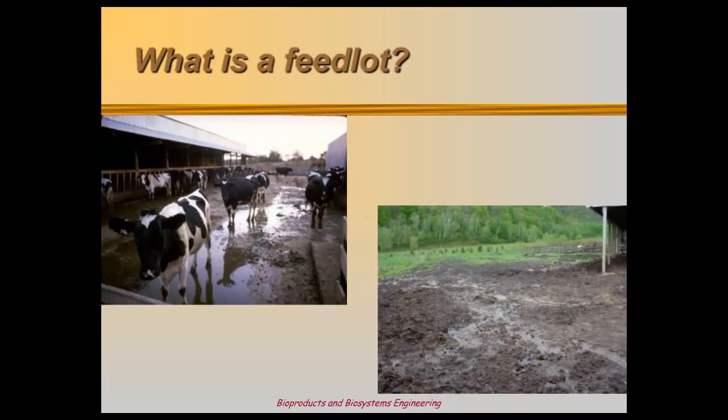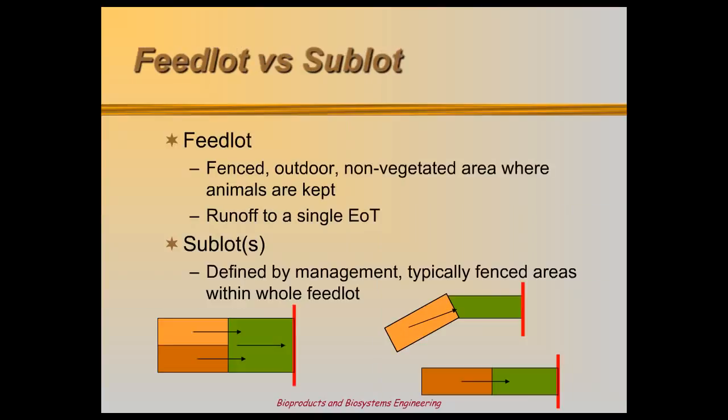MinFarm considers only the outdoor holding areas as a feedlot. Multiple pens in the same feedlot with different management needs are called sublots. The left drawing shows a feedlot with two sublots sharing a single buffer. MinFarm can account for up to four distinct sublots, provided they all run through the same buffer. If sublots are arranged differently, the different buffers and runoff directions would require a separate MinFarm model to be run on each lot.